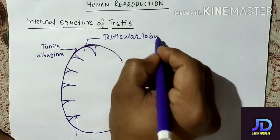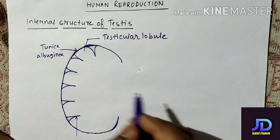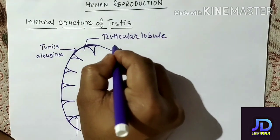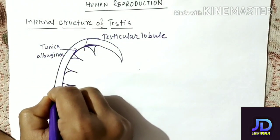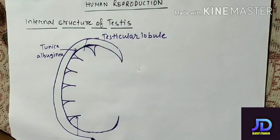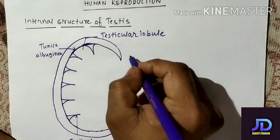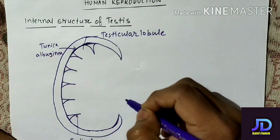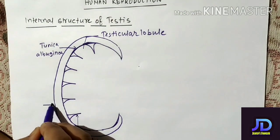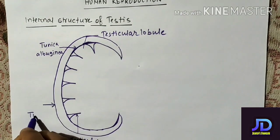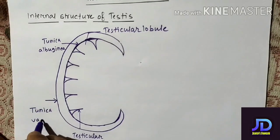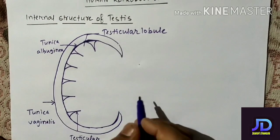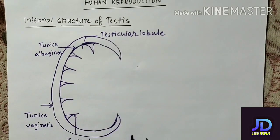Tunica albuginea is surrounded by another protective layer. This outer layer is called tunica vaginalis.